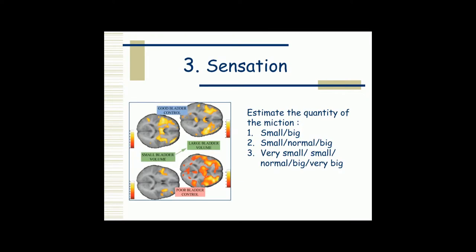To train sensation, it is very easy — you have direct feedback. Ask the children when they go to pee to estimate the quantity of urine. Is it small or big? Fine-tune until they can distinguish very small, small, normal, big, and very big quantities.